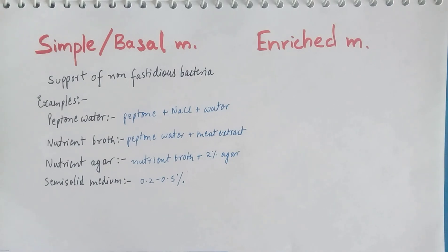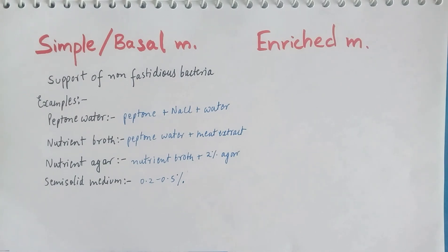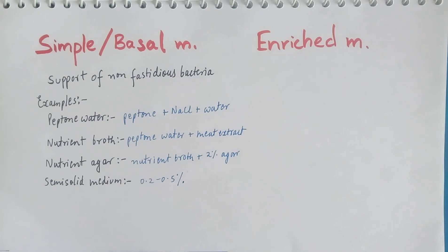The first type is simple or basal media. Simple media is used for support of non-fastidious bacteria like Staphylococcus or Streptococcus. Non-fastidious bacteria do not require any special ingredient for growth. Examples include peptone water, in which peptone, sodium chloride, and water are used.